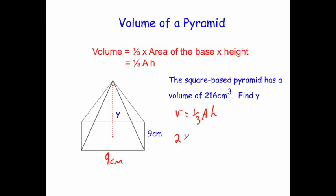So 216 = 1/3 times the area of the base. The area of the base will be 9 times 9, which is 81, times h. In this case, h is y, so times y.